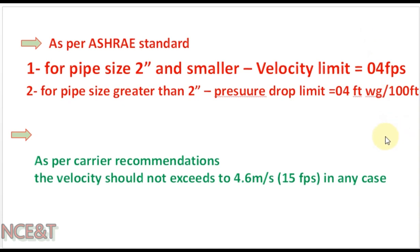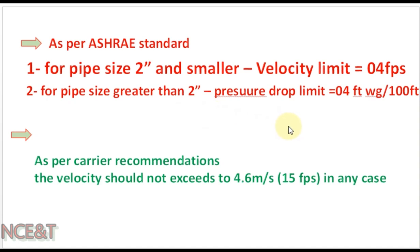For selection of pipe size for any chilled water piping network, we need to follow these rules. As per ASHRAE standards: for pipe size 2 inch or smaller, a velocity limit of 4 feet per second will be followed; for pipe size greater than 2 inch, a pressure drop limit of 4 feet water gauge per 100 feet must be followed. As per Carrier recommendations, the velocity should not exceed 4.6 meters per second or 15 feet per second in any case.